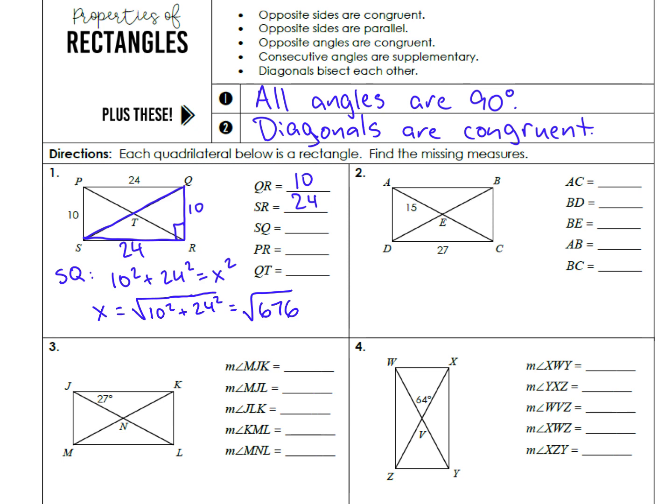Square root of 676 because 10 squared is 100, 24 squared is 576. You add those two, bada bing, bada boom. And the nice thing about this is that we get a nice whole number, 26. So SQ, the whole diagonal, is 26. And then PR is also 26. The PR is the other diagonal, and as we found out, diagonals are congruent. And then QT is 13 because the diagonals are also bisected, we cut them in half.